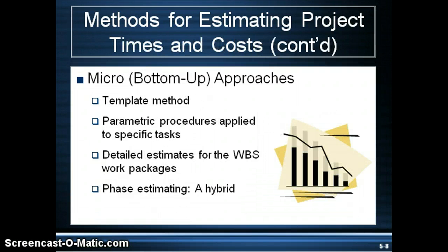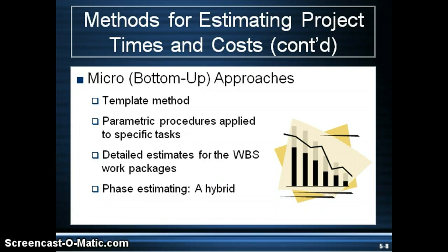Now for the bottom-up type approaches. The template method uses projects similar to past projects as a starting point, noting differences in the new project and adjusting for them. The next is parametric procedures applied to specific tasks: using known data on how much labor is needed to perform a certain task, you can predict what would be needed for the new project. For example, with a software conversion project on 20 computers, knowing the labor needed for one computer allows you to estimate the labor required for all 20.